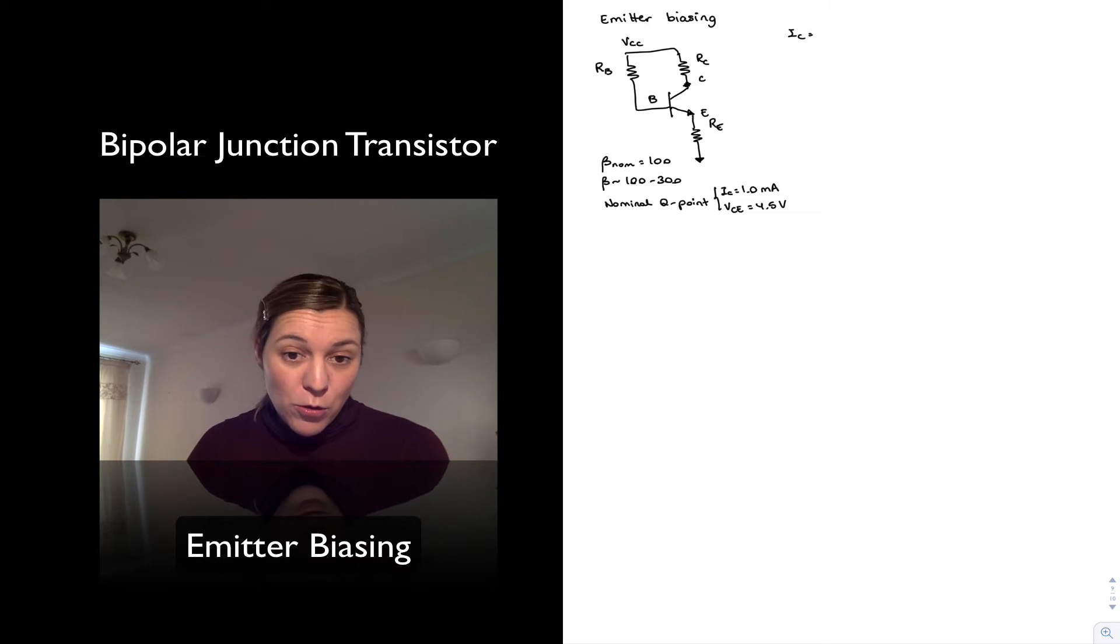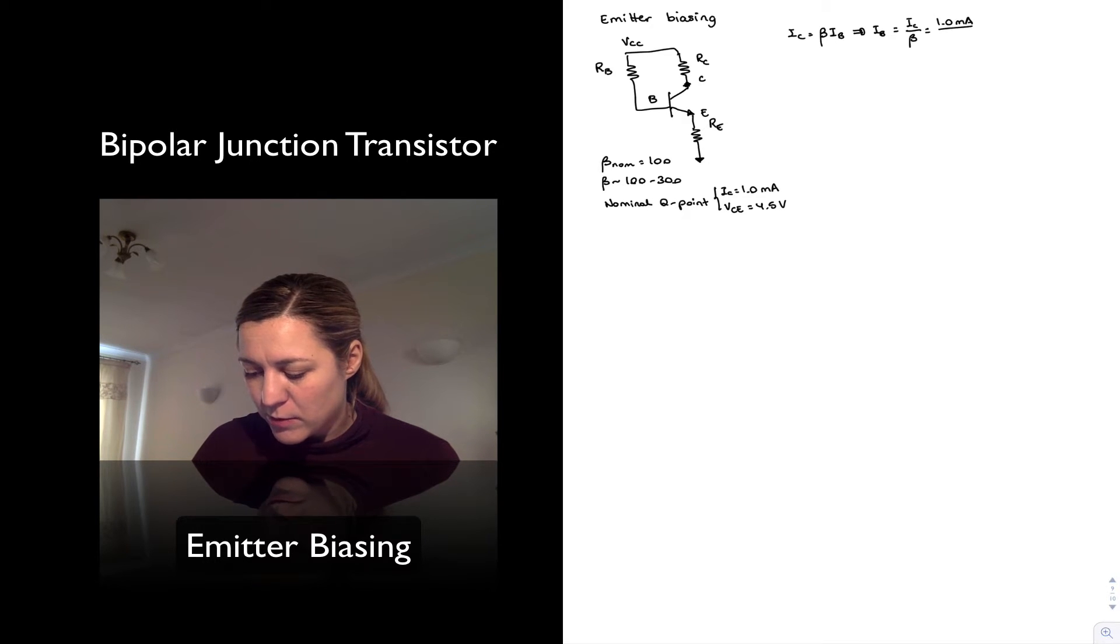Since I'm in the linear region, IC is equal to beta IB, and from here I can calculate the needed value of IB to set IC to 1 mA. That's going to be IC over beta, or 1 mA divided by 100, which is 10 microamps.